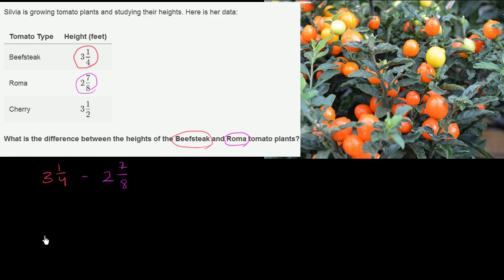The first thing that I like to do is convert both of these into mixed numbers. Sorry, they're already mixed numbers. To convert both of these into improper fractions. So 3 1/4 is the same thing as 3 plus 1/4, which is the same thing as 12/4 plus 1/4. That's the same thing as 3 1/4.